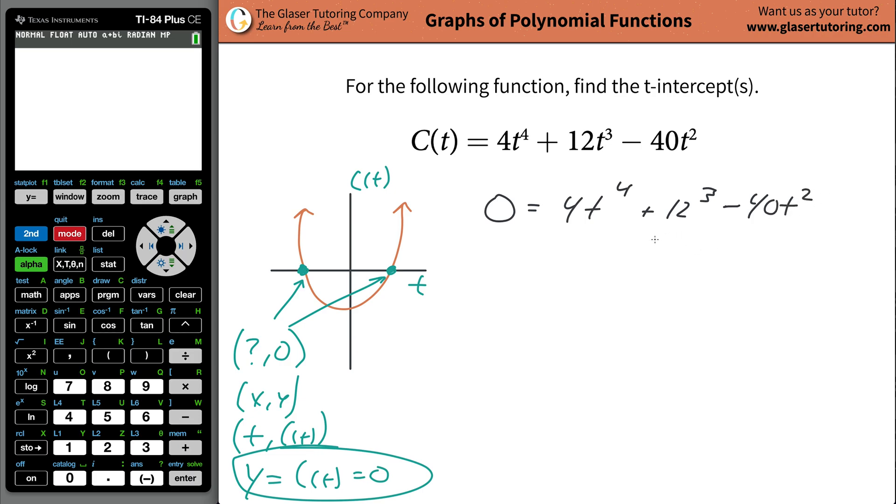Now, just look at it for a second. What does t have to be in order for this thing to become zero? Zero, right? If t is zero in here, this whole thing's zero. If the t in here is zero, that whole thing's zero.